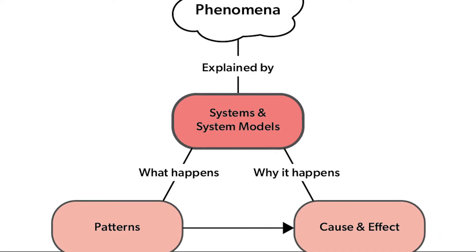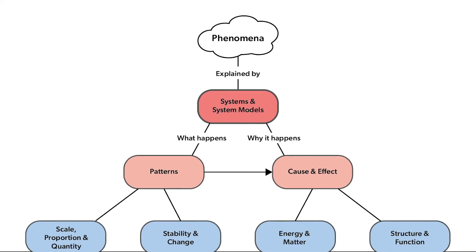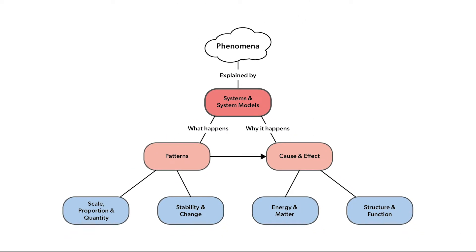Systems and system models is the most foundational cross-cutting concept. All things that scientists study are part of systems. A system is an organized group of related objects or components. Scientists use system models to understand how systems work. The other cross-cutting concepts describe what patterns happen and explain why patterns happen in systems. Understanding systems is very important in science.